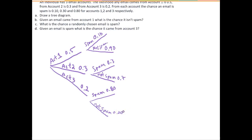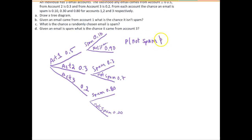We can answer question B pretty quickly. Given an email came from account 1, what is the chance it isn't spam? The probability of not spam given account 1 is simply just equal to this branch, so 0.90.